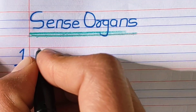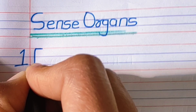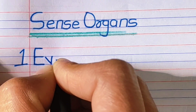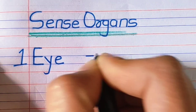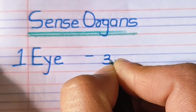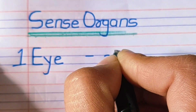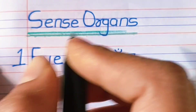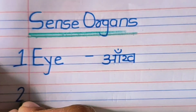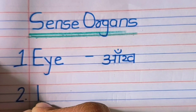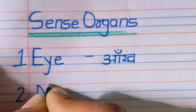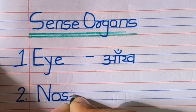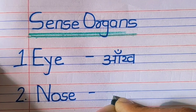Hello friends, today we are going to learn and write sense organs. There are five sense organs. First: eyes, spelled E-Y-E-S. Eyes help us to see.